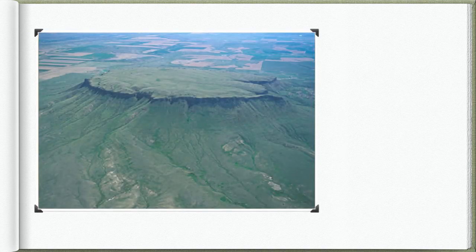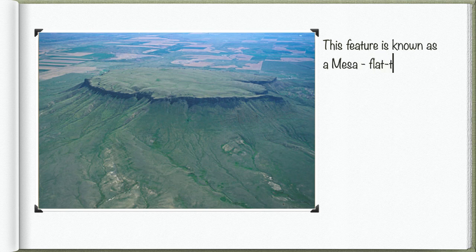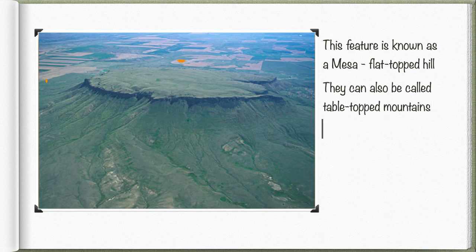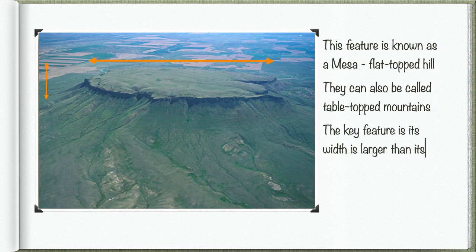Here we're going to look at the feature that is now produced. This feature is known as a mesa or flat-topped hill. We can also call it a tabletop mountain. Notice the key feature: the width is larger than the height. That's how we know it's a mesa — the width is larger than the height.